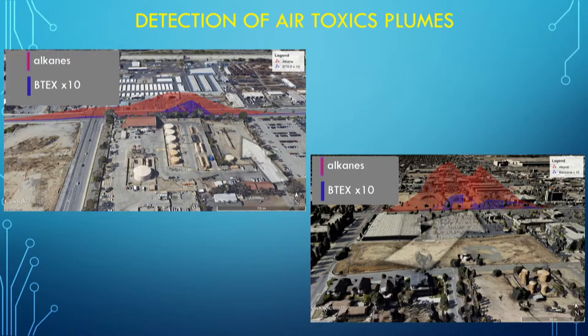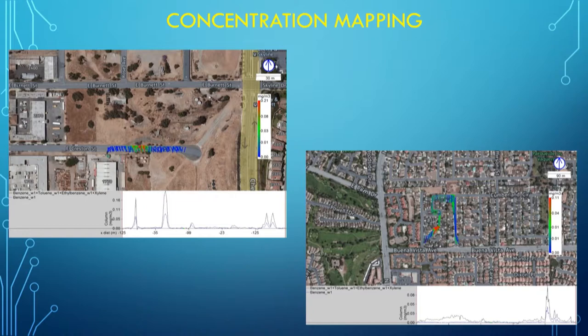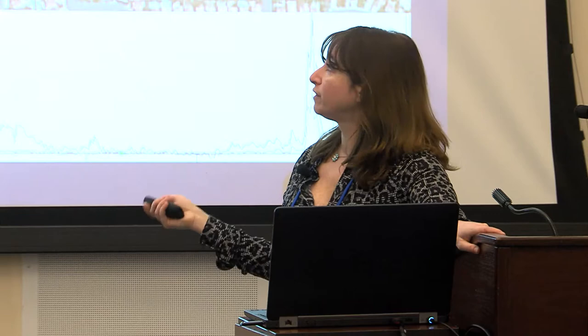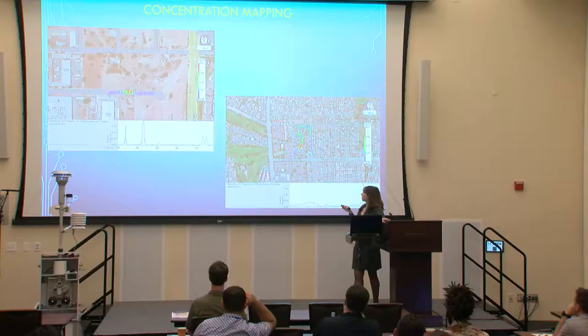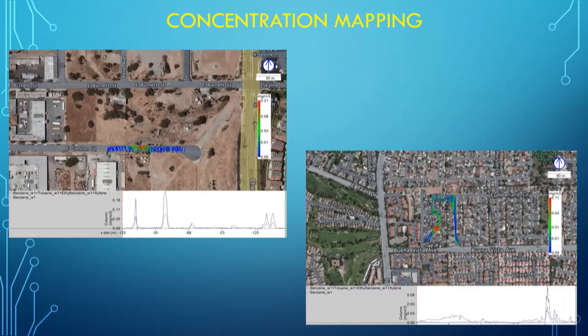You can also do concentration mapping throughout the community to see where pollution hot spots are. These are a couple of examples of concentration mapping for BTECs within residential areas in Los Angeles that are adjacent to small oil wells and oil tanks — just an example of what you can do with these types of measurements.